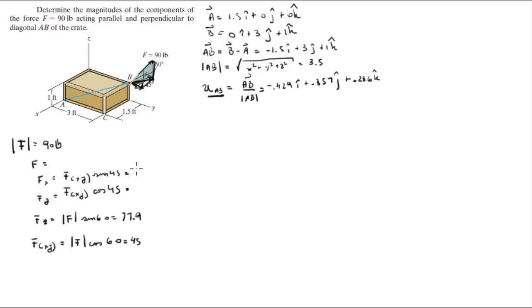So this comes out to be 31.82, 31.82. However, the x component is negative since it's going towards the negative x axis. So it's negative 31.82i plus 31.82j plus 77.9k.